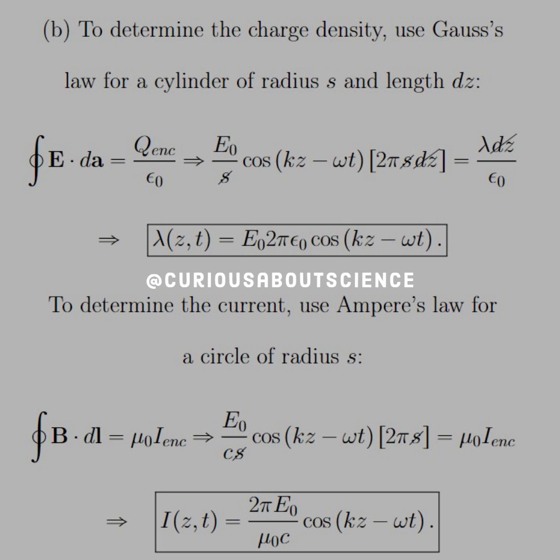Okay, so, Gauss's law, the enclosed integral of D-A, is Q enclosed over epsilon naught. Push that through. We get E naught over S, cosine, KZ minus omega T. And then, we have a cylinder of radius S and length DZ.